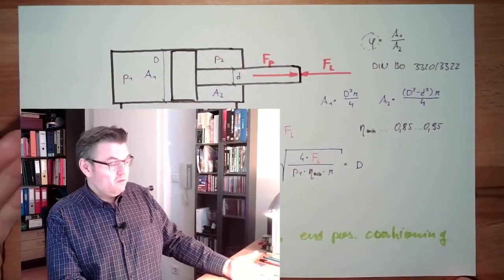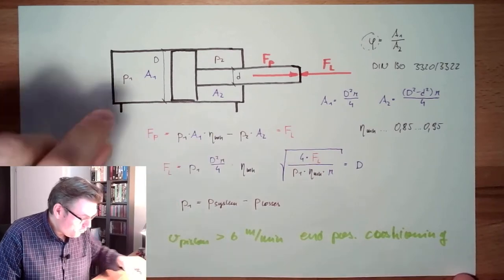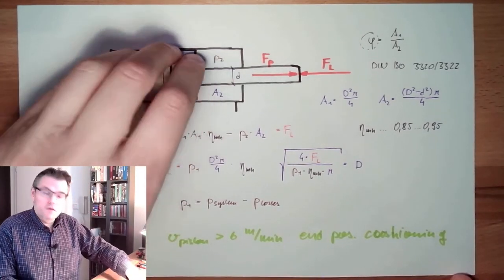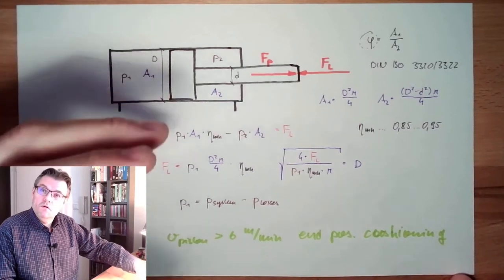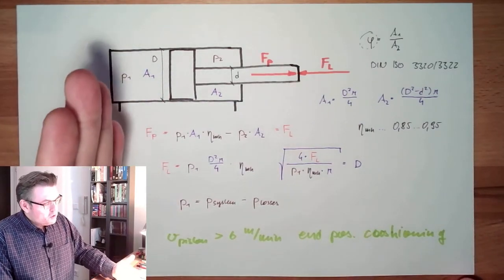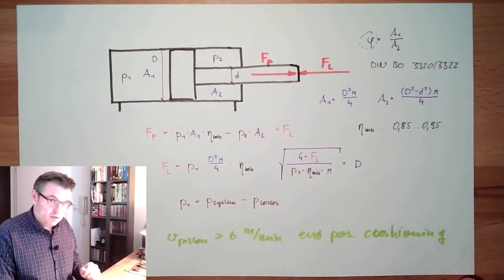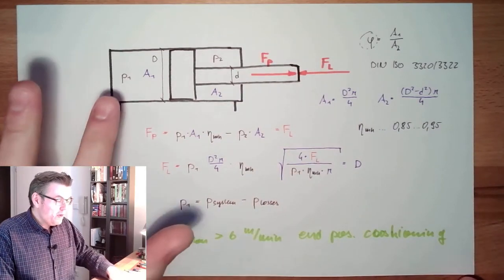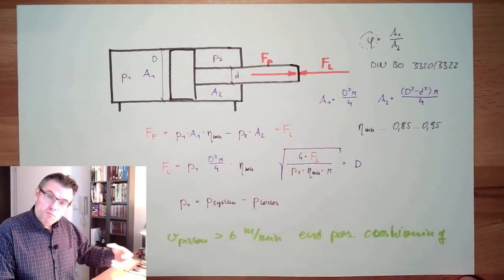In the last video we already said it's almost settled. This was the result of last video. We had the dimensioning of the servomotor, of the hydraulic cylinder. And we said, once we know how fast the servomotor has to go, we know how many liters per second we have to put inside.